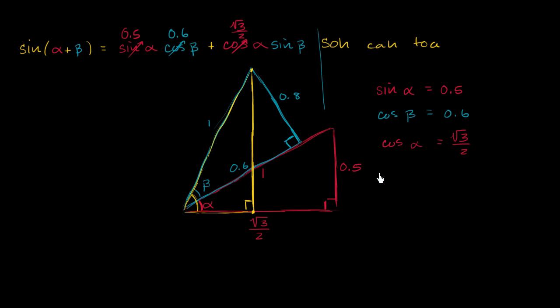Sine of beta. Opposite over hypotenuse is 0.8. This is 0.8. And actually, let me write that as 4 fifths, just because I think it's going to make it a little bit easier for me to simplify right over here.